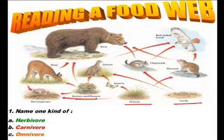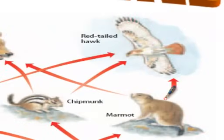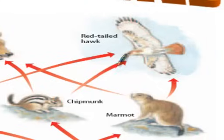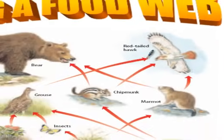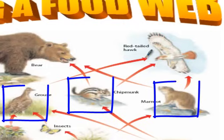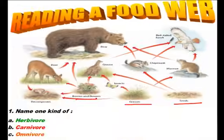To find a carnivore, you need to find an animal in the food web that has arrows pointing at it only from animals. In our food web, the red-tailed hawk has energy flowing from the marmot, the chipmunk, and the grouse — all animals. So the red-tailed hawk has three arrows coming from animals, which makes it a carnivore. That's how you figure out who the herbivores, carnivores, and omnivores are in a food web.